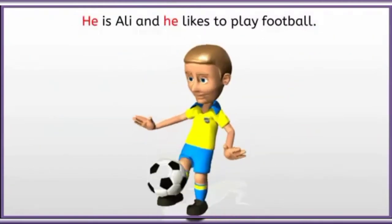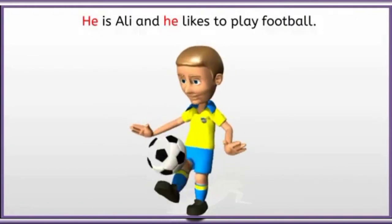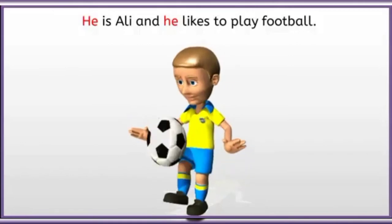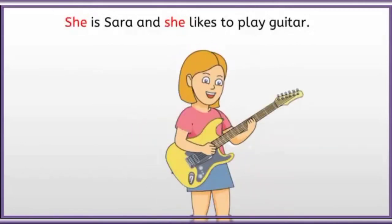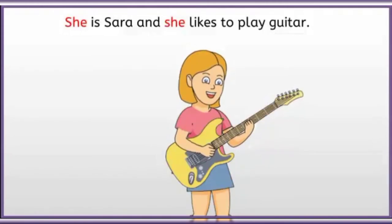And now one by one we will learn how to use he and she. He is Ali and he likes to play football. We can see that he is a boy, so that is why we have used he. She is Sarah and she likes to play guitar. We can see that she is a girl, and girls are females. That is why we have to use she for Sarah.